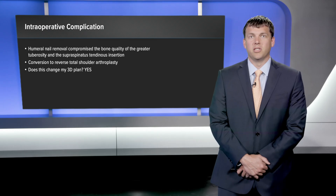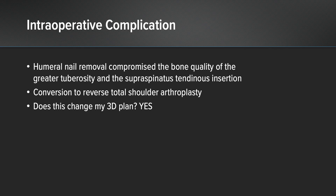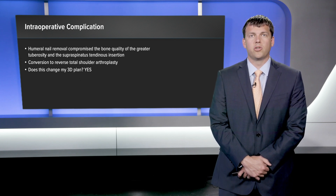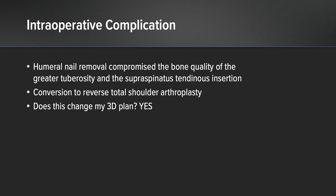We did experience an intraoperative complication which we had anticipated. On removing the humeral nail, our bone quality of the greater tuberosity was compromised and the supraspinatus tendon insertion was deemed to be dysfunctional. We therefore elected to change intraoperatively to a reverse total shoulder arthroplasty, which was our plan B.